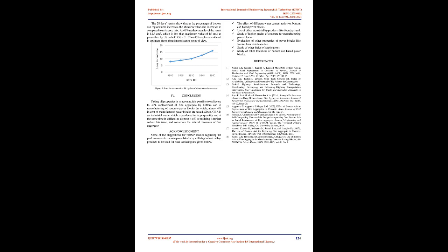Conclusion: Taking all properties into account, it is possible to utilize up to 30% replacement of fine aggregate by bottom ash in the manufacturing of concrete paver blocks, achieving almost 4% savings in cost of manufactured paver blocks. Since CBA is an industrial waste produced in large quantities that is difficult to dispose of, utilizing it further solves the disposal issue and conserves the natural resources of fine aggregate.